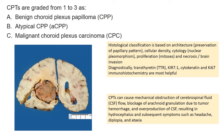They can be benign choroid plexus papillomas, atypical choroid plexus papilloma and malignant choroid plexus carcinoma. Histological classification is based on the architecture — that is the preservation of the papillary pattern, cellular density, cytology, nuclear pleomorphism, proliferation or mitosis, and necrosis or brain invasion. Diagnostically, CK and Ki-67 aid in diagnosis. These tumours cause characteristic outflow obstruction of the CSF, resulting in blockage of the arachnoid granulations due to tumour haemorrhage, overproduction of CSF, hydrocephalus and subsequently headache, diplopia and ataxia.